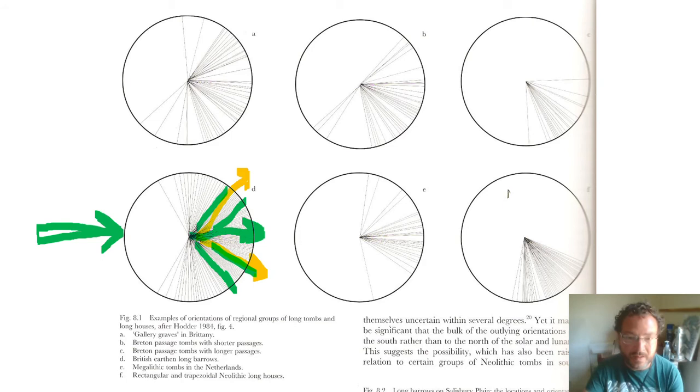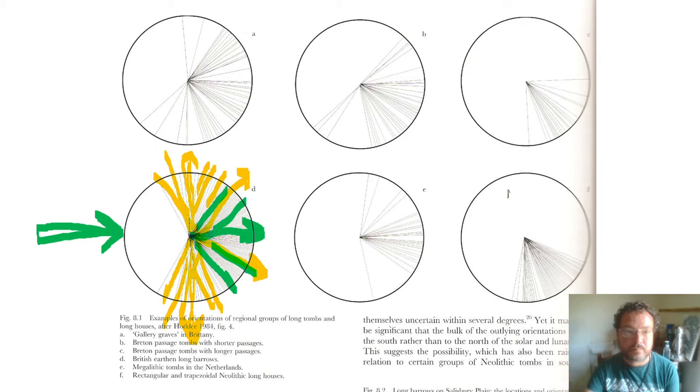But one thing we do see is that there are a number of alignments which are out of that solar line or lunar line. Again not many to the west, maybe there was some kind of taboo facing the west we don't know. But these don't suggest solar alignments. If you're looking directly north or directly south, perhaps you're looking at something else. Perhaps there are stellar or other heavenly alignments being used.